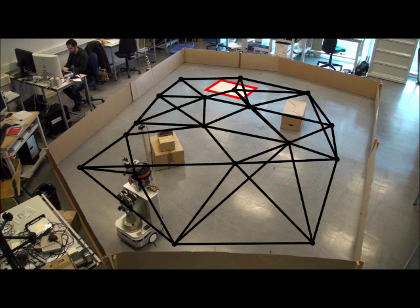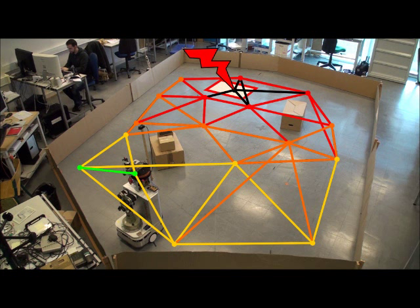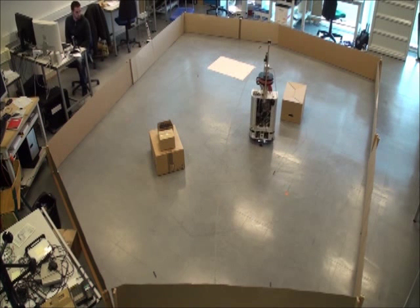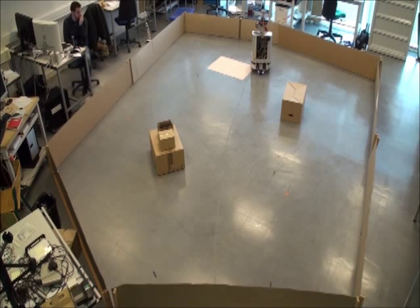Instead of learning conditionings between places and actions, the robot learns conditionings between transitions and actions. Reaching a specific place can be rewarded. The reward potential is diffused through the cognitive map and acts as a bias on the transition selection. This gradient descent allows to choose the most effective transitions to reach the goal place.